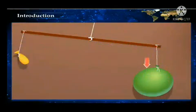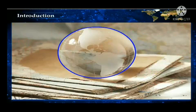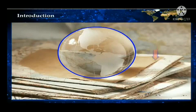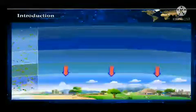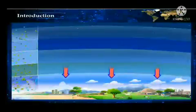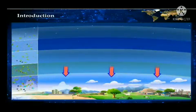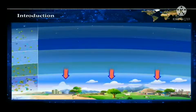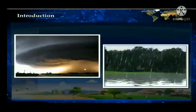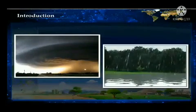On the basis of this activity, we can see that anything that has a weight exerts pressure on the thing that lies below it. Thus, the air in the atmosphere exerts pressure on the earth's surface below it. Due to this pressure, various phenomena such as storm and precipitation occur in the atmosphere.